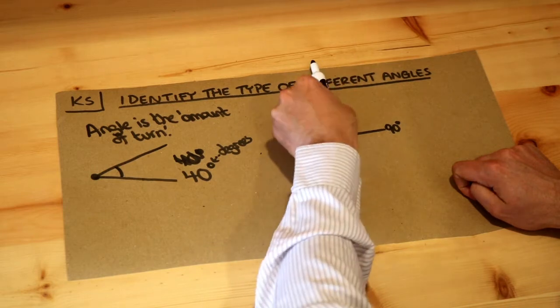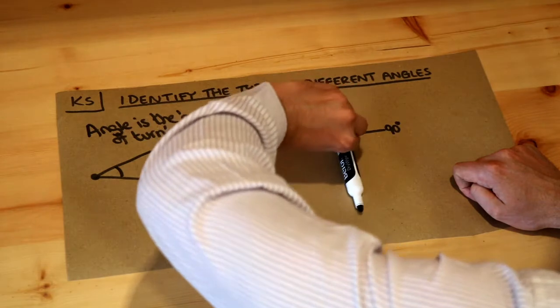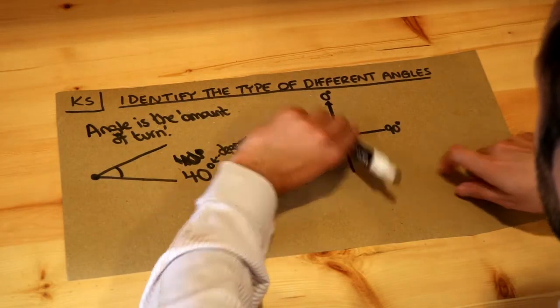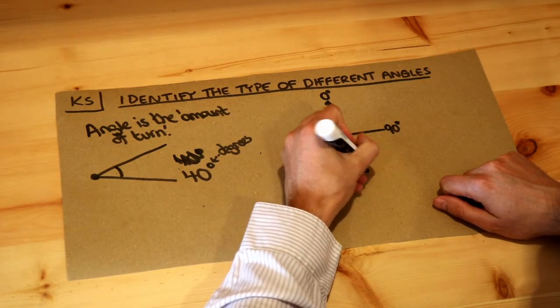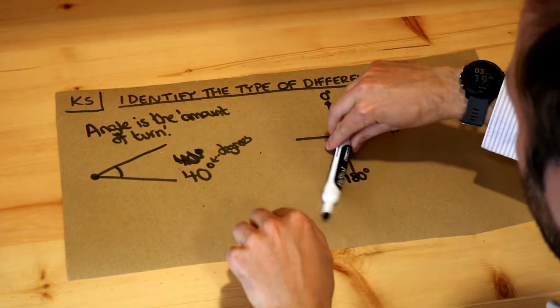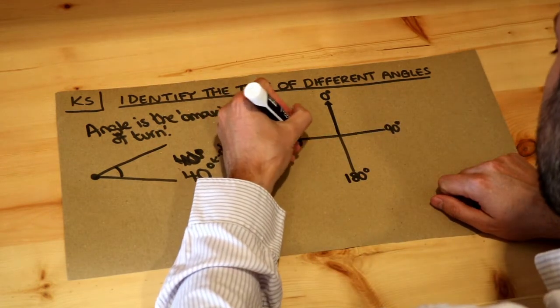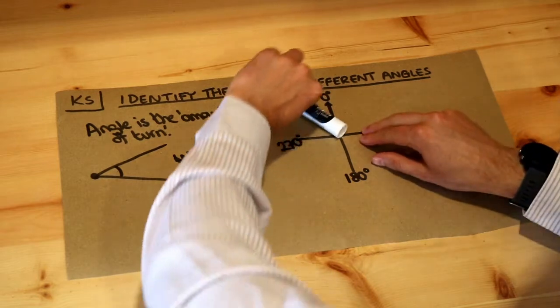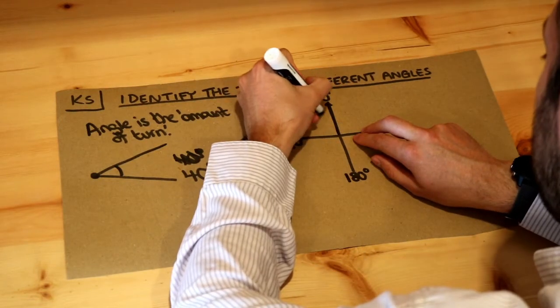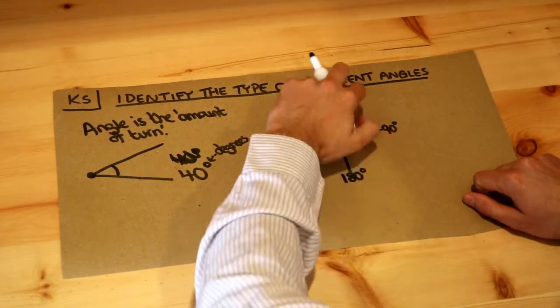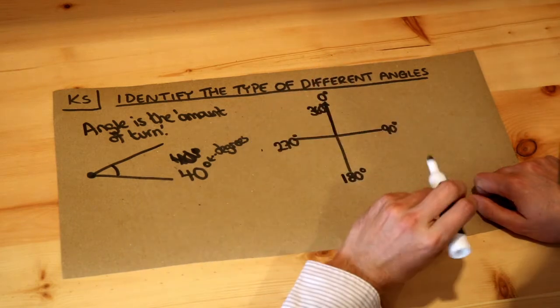And then if you do a half spin, so I spin a quarter turn then another quarter turn, so in total I've spent a half of the way around, then that would be two lots of 90, so that would be a 180 degree turn. And then if I do another quarter turn, that would be another 90 degrees, so that's 270 degrees. And then finally when I get back to the start, that would be a full turn of 360 degrees. So a full spin would be a turn of 360 degrees.